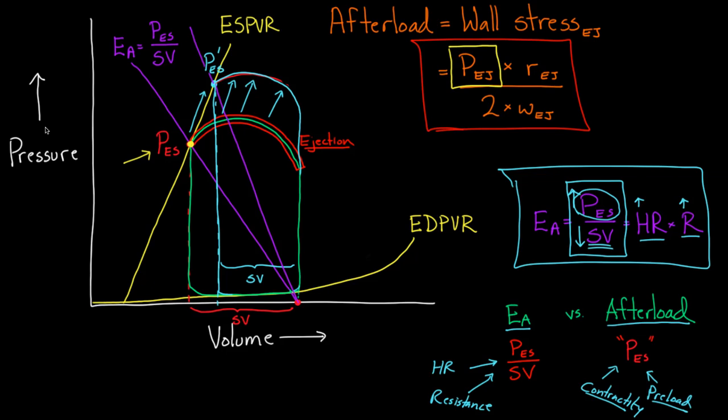As a final point, we increased arterial elastance by either increasing heart rate or increasing resistance. But we could have also decreased heart rate or resistance, and we would have seen a smaller arterial elastance.